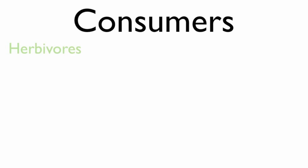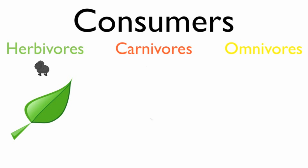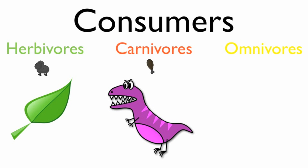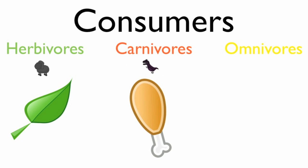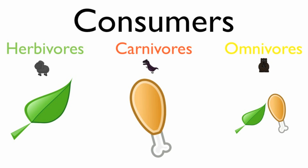In conclusion, a consumer is anything that eats food for energy. The three types are herbivores, carnivores, and omnivores. The sheep is an example of a herbivore because it eats plants for food. The T. rex was an example of a carnivore because it ate only meat for food. And a bear is an example of an omnivore because it eats both plant and animal. Consumers: living things that eat organisms for energy.